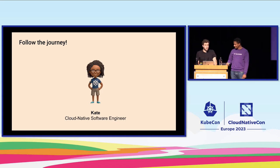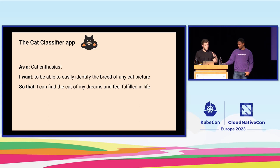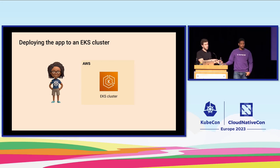We're going to be following the journey of Kate today. Kate is a cloud native software engineer and she's going to build a cat classifier app — a very simple app where you give it a picture of a cat and it tells you back what kind of cat it is. Kate has an AWS account with an EKS cluster already deployed and she's going to deploy her application on the cluster.